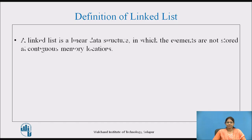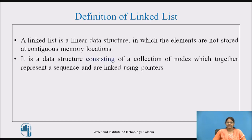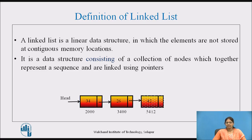Definition of Linked List: A linked list is a linear data structure in which the elements are not stored at contiguous memory locations. It is a data structure consisting of a collection of nodes which together represents a sequence and are linked using pointers. It is an example which shows nodes at different memory locations which are linked by using pointers, and it represents a linked list.